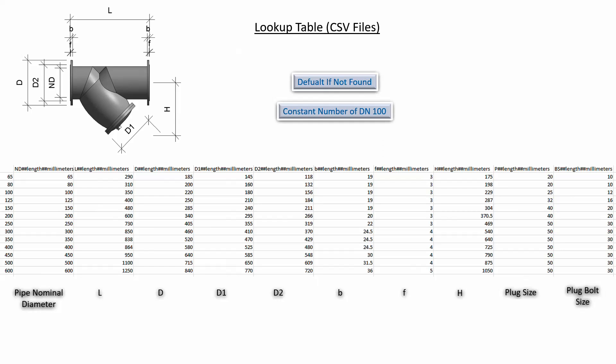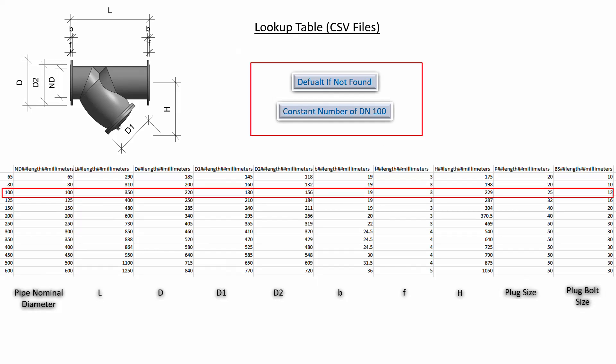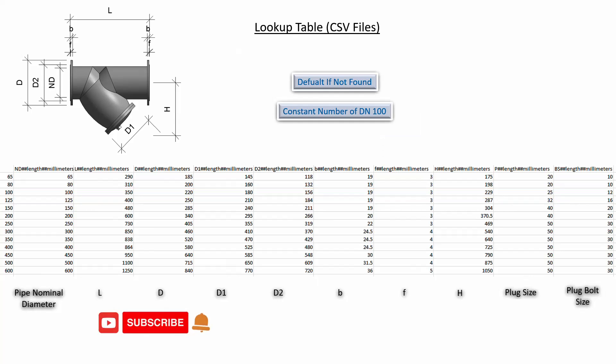I will use this lookup table CSV file to create the parametric family. There are DN65 to DN600. I will use this formula for default when not found. Before going to Revit, I would like to request you to subscribe to the channel and click the notification bell for the next video. OK, let's go to Revit.